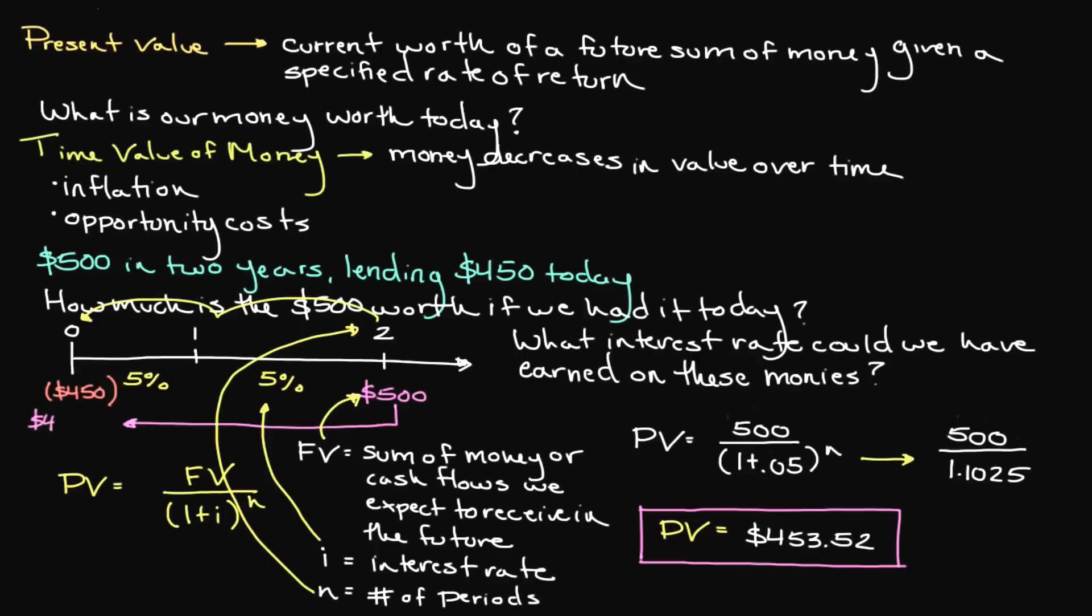Congratulations, you've just solved for the present value. But what exactly does this value mean to us? What this means is that the $500 that we expect to receive two years from now, discounted by 5% compounded annually, is the equivalent of $453.52 today.